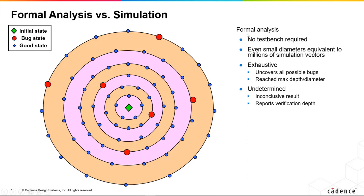So the benefits of this formal analysis is we don't need any test bench, there's no stimulus. Even small diameters, even making 10 clocks, might be the equivalent of millions upon millions of simulation test vectors. It's exhaustive.